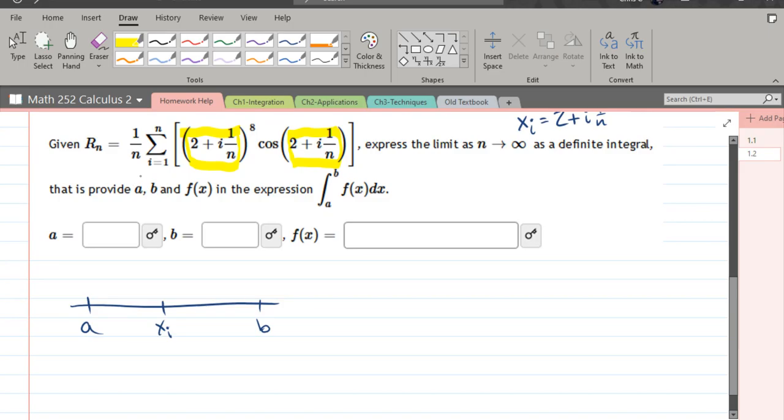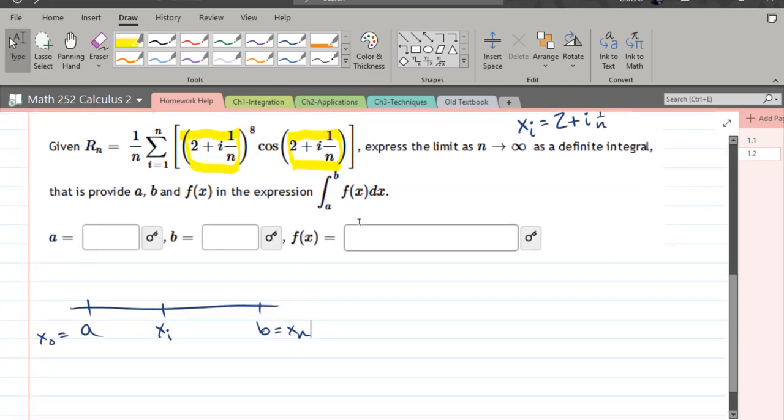xi is an intermediate value between a and b. At the initial value, it's a. At the final value, it's b. Generally, x0 is the initial value and xn is the final value. That's one way to get this.